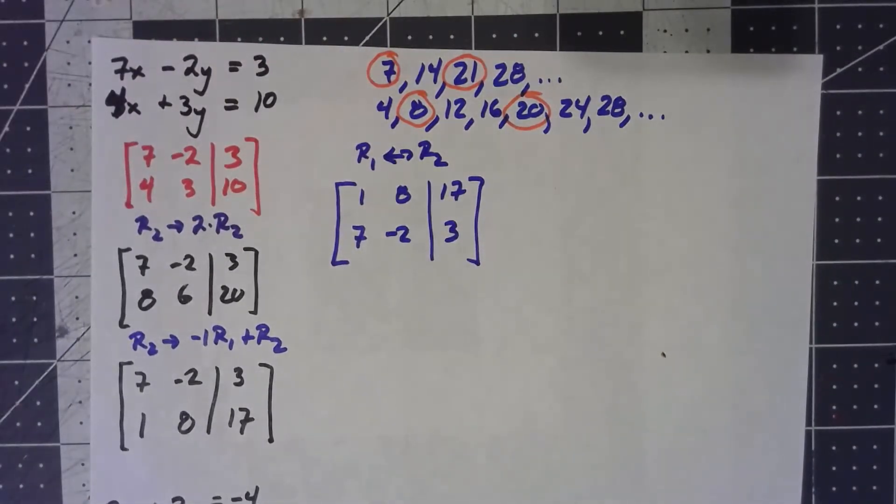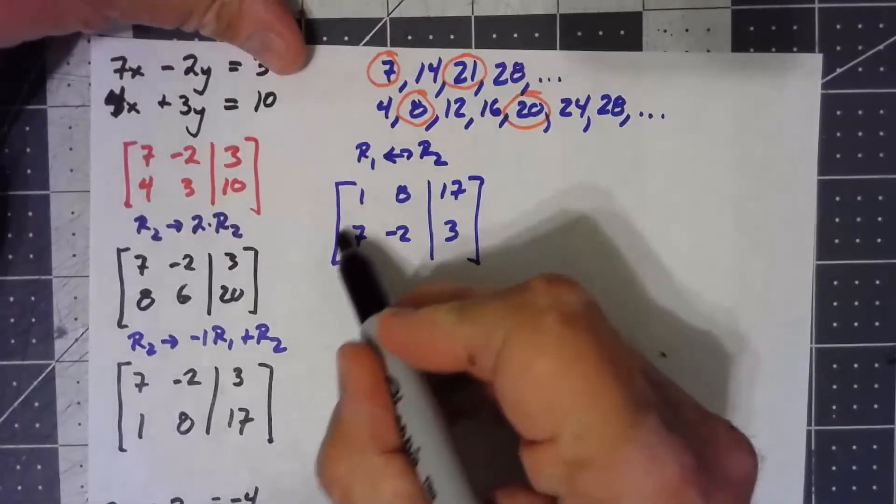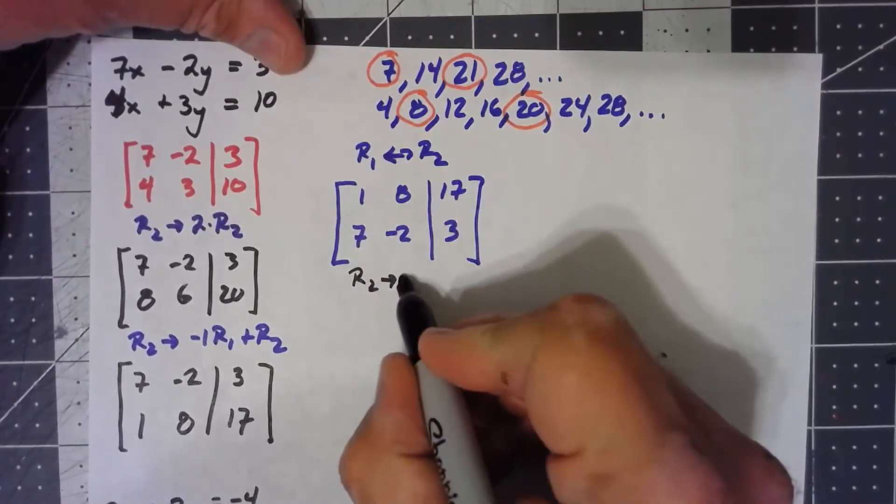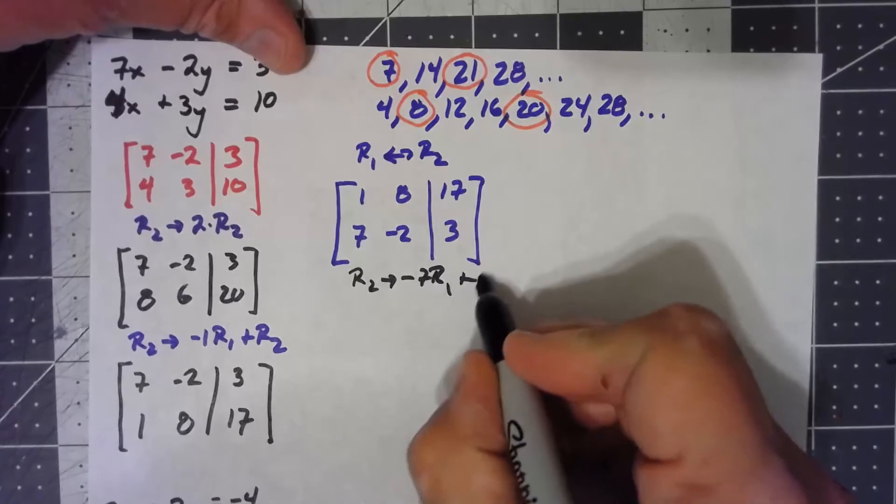Now that I've got the 1, everything else follows just like before. So, next step is to zero out this lower left. So row 2 becomes negative 7, row 1, added to row 2.